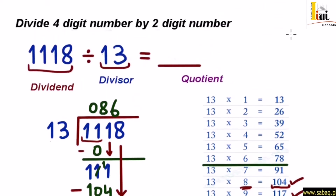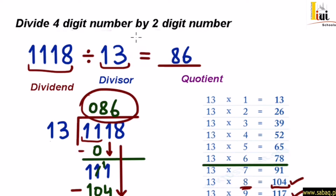तो जब 0 remainder आ जाता है, तो हमारी division complete हो जाती है। और हमारा जो quotient होता है — यहाँ पर आंसर क्या आया? 86। इसके left side पर जो 0 है, वो लिखना important नहीं है। तो जब 1118 को divide करते हैं 13 से, तो जवाब आता है 86। आज हमने देखा कि 4-digit number को 2-digit number से कैसे divide करते हैं।